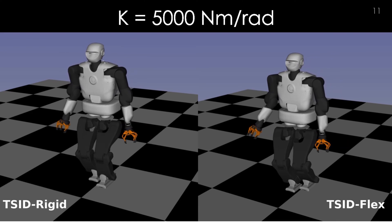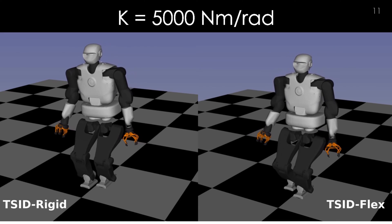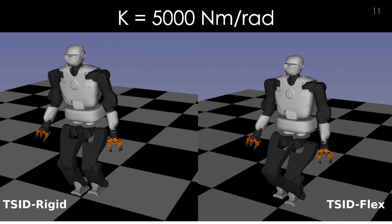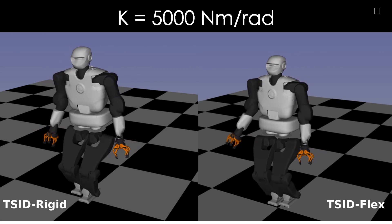When the link is sufficiently stiff, TSID Rigid performs well, and in conclusion, it is not necessary to design a controller that considers the link flexibility.